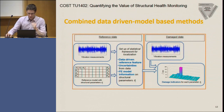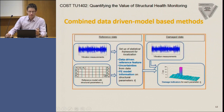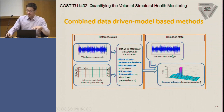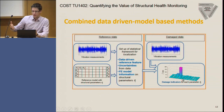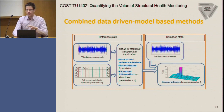We also have a chance with these statistical distance measures to get damage indicators that can be automatically computed. As a little illustration: in the reference state, we have vibration measurements used to build up a data-driven reference model, taking into account uncertainties in the data, and from the finite element model we use some information on the structural parameters. Then in the damage state, new vibration measurements are directly used to compute damage indicators for the model parameters in some statistical tests, and from this information we can see where damage happens. In a second step, quantification of the damage can be done once we know where damage is located.